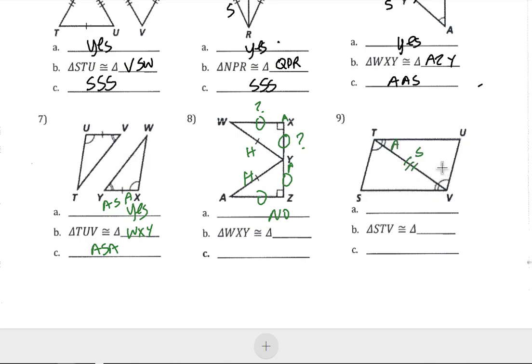With number 9, there's an angle-side-angle pattern between the two triangles. There's like a twist-type thing in the way we name them, so STV goes with UVT.